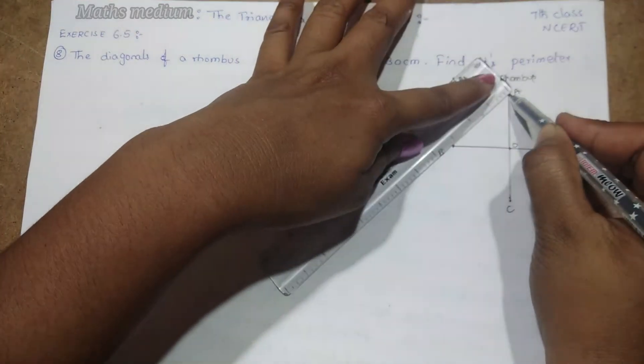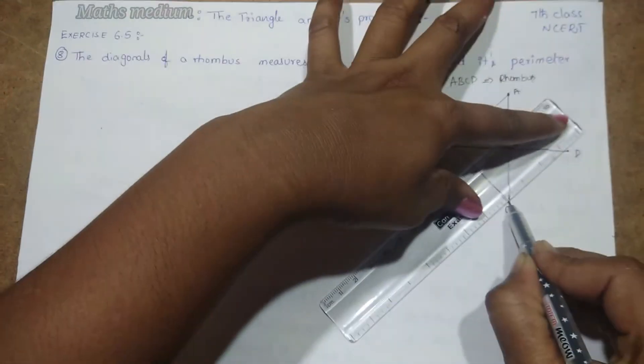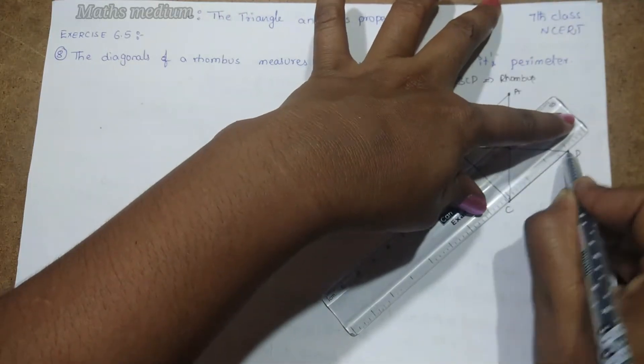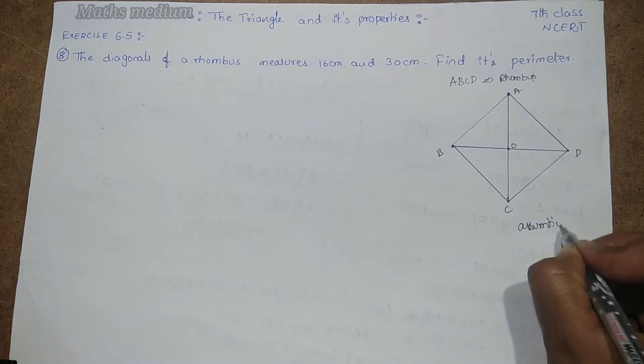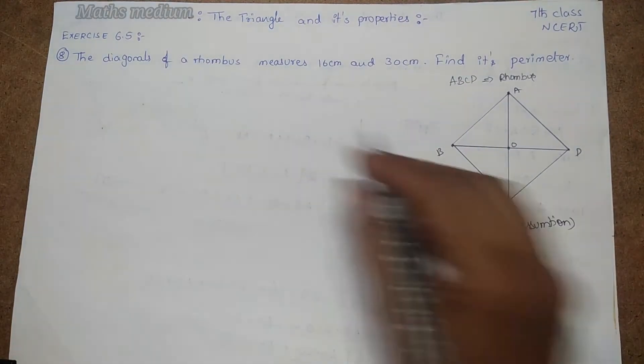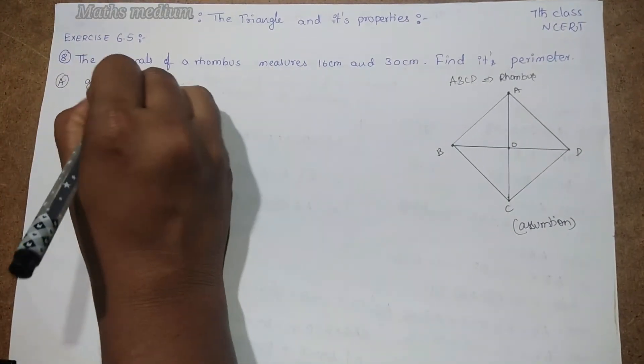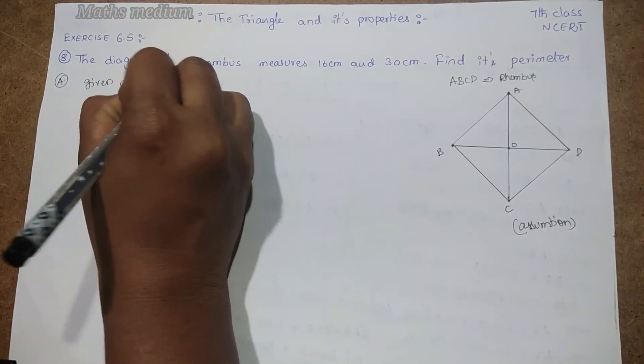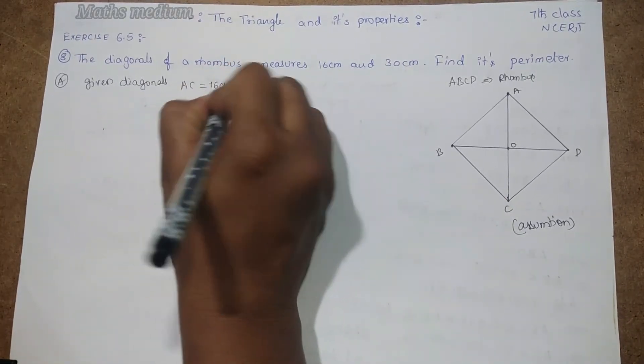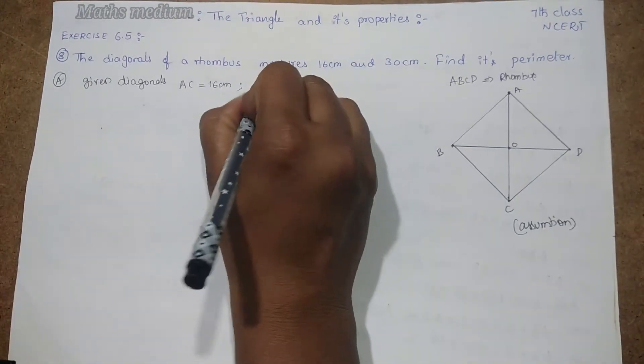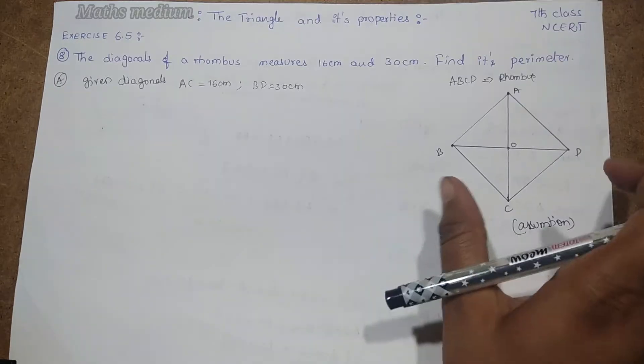Now connect this ABCD as a rhombus using a scale. Here, let the given diagonals be AC equal to 16 cm and BD equal to 30 cm.